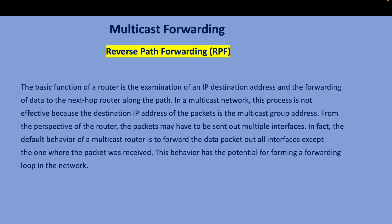In multicast forwarding, to avoid loops we use Reverse Path Forwarding (RPF). The basic router function of examining the destination IP address is not effective in multicast because the destination is the multicast group address. A multicast router may need to forward packets out multiple interfaces, and the default behavior is to forward out all interfaces except the one where the packet was received — which has the potential to form a forwarding loop.